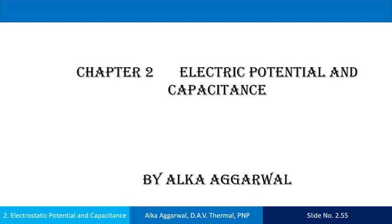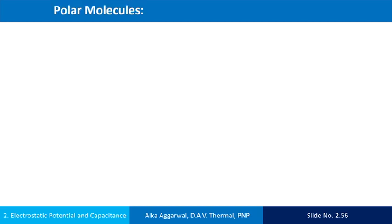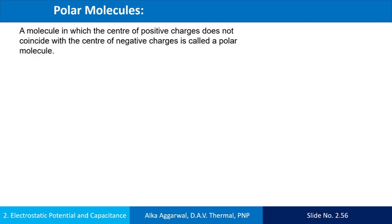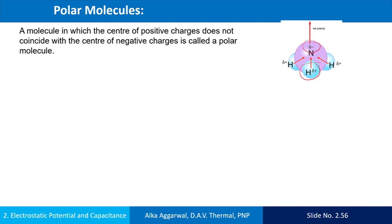Today we start with polar molecules. Polar molecules are those in which the center of positive charge does not coincide with the center of negative charge. It is a diagram of the ammonia molecule, and see that the center of the positive charge does not coincide with the center of the negative charge. Polar molecules have permanent dipole moment and do not have symmetrical shape.